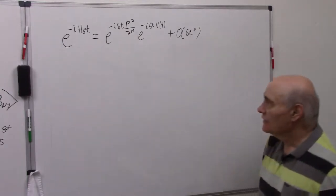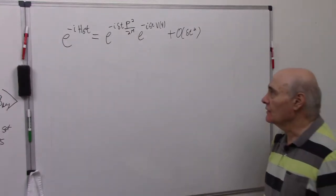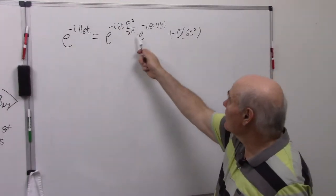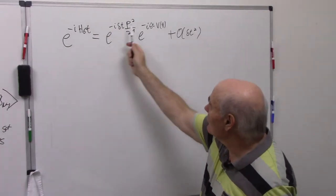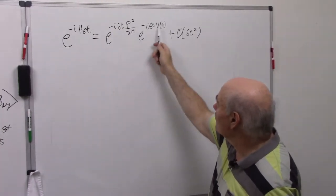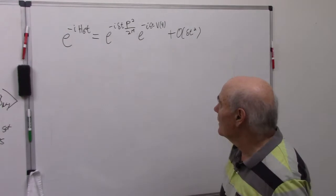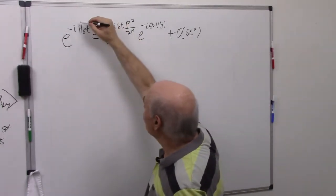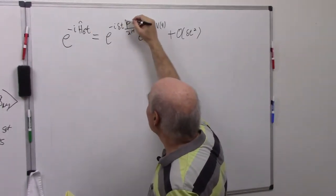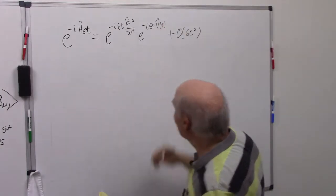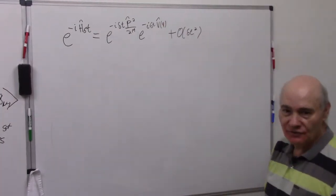V is a function of q potential times some factor. This is correct to order delta t squared. Now there's a lot of non-rigorous stuff we do in quantum mechanics. This isn't exactly true because our operators don't commute. p squared over 2m doesn't commute with V. These are operators. I don't put in the hats anymore. You should be able to tell from context what's an operator and what's a number.